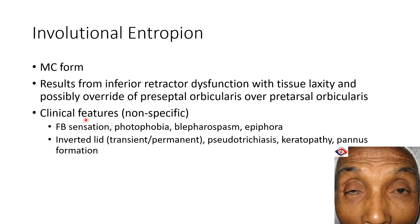Now let us discuss the clinical features which are common to all types of entropion. There will be foreign body sensation, photophobia, blepharospasm, epiphora, and inverted lid which can be transient or permanent. There can be pseudotrichiasis — trichiasis means misdirected lashes and in case of entropion there will be pseudotrichiasis. There can also be keratopathy and pannus formation.